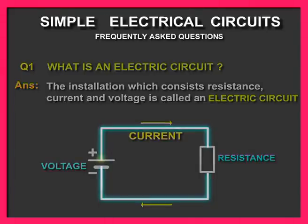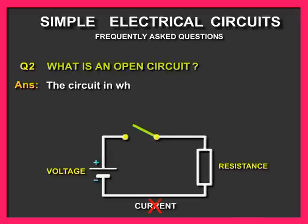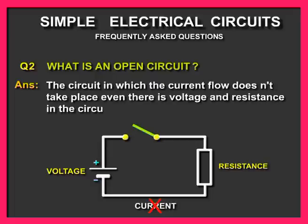Question number two: What is an open circuit? Answer: The circuit in which the current flow does not take place, even though there is voltage and resistance in the circuit.